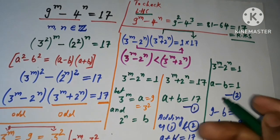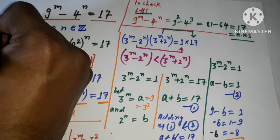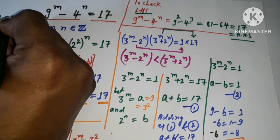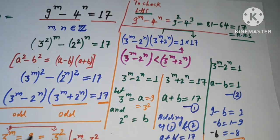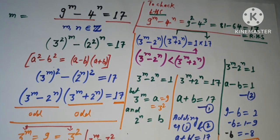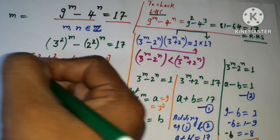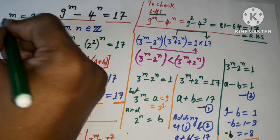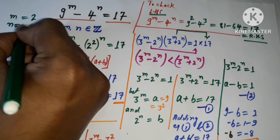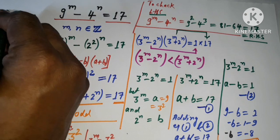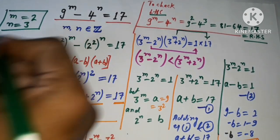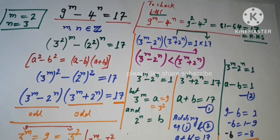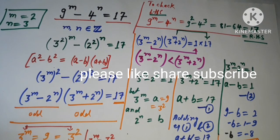Thank you so much for subscribing to my channel. The answer is m equals 2 and n equals 3. Those who have not already subscribed, please subscribe and hit the bell icon. Thank you so much.